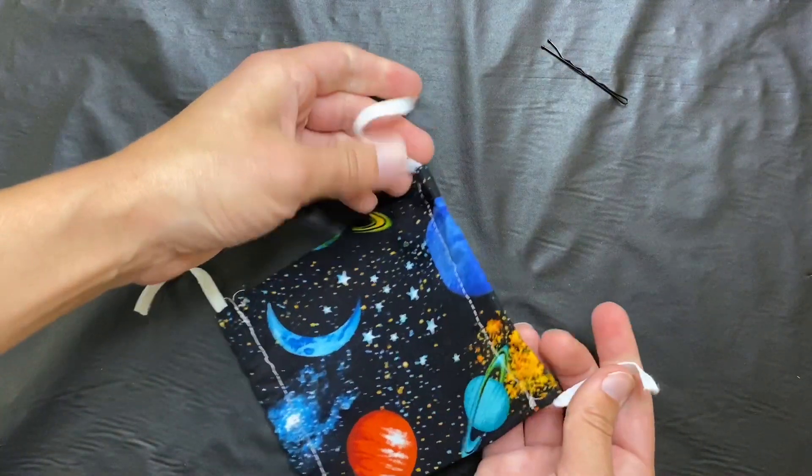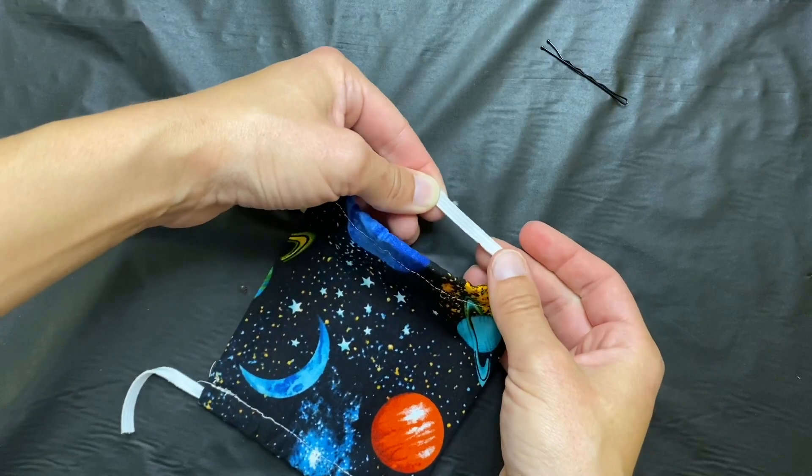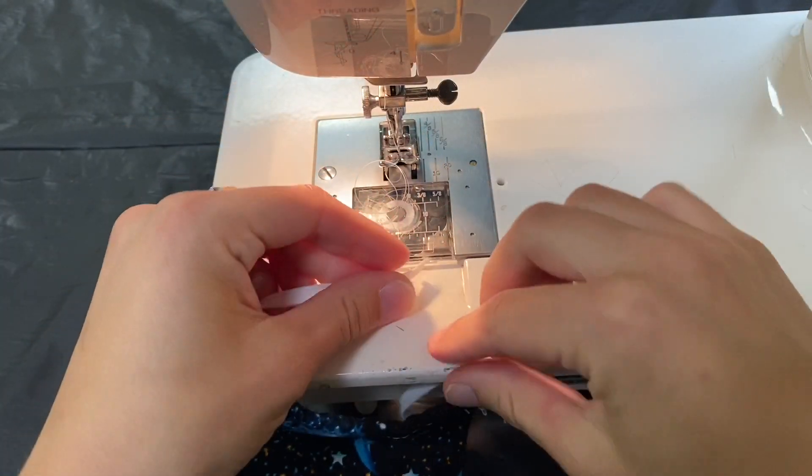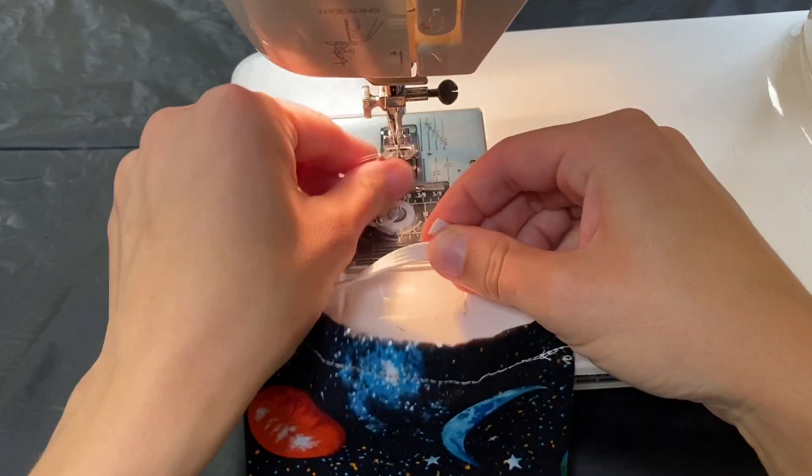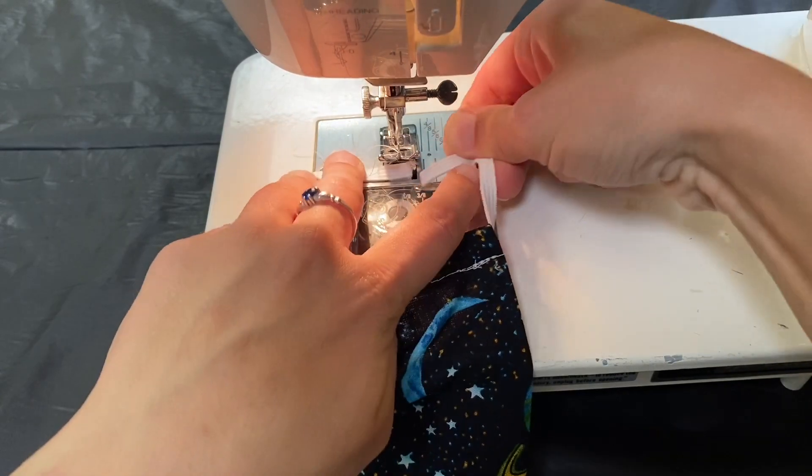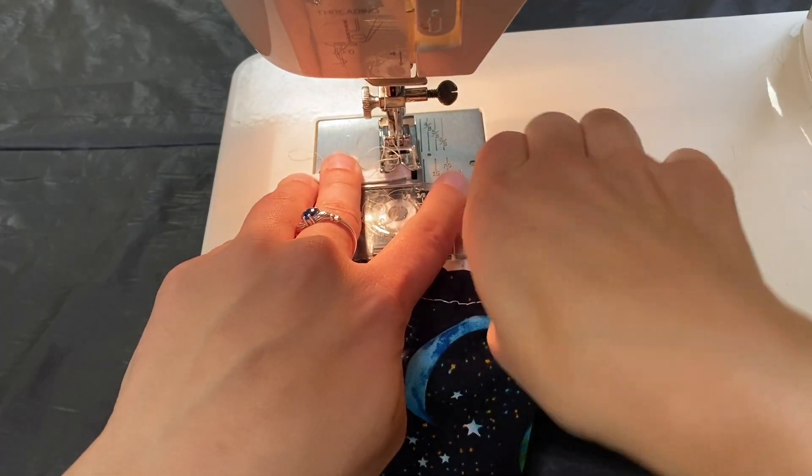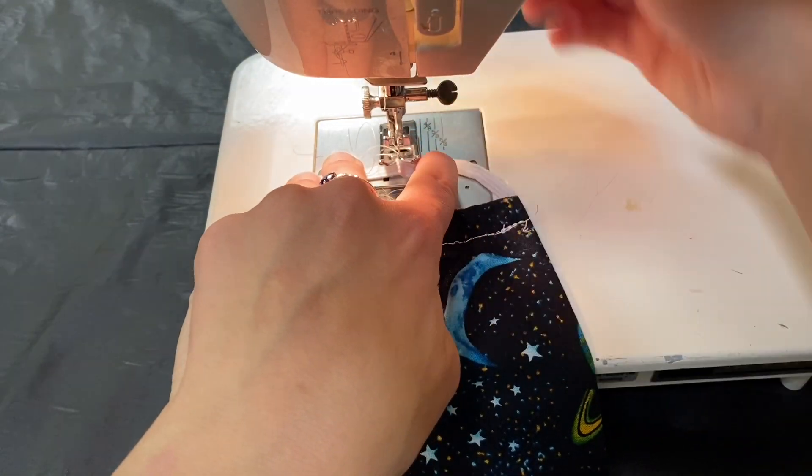There we go now all we have left is to sew these pieces of elastic together back to the sewing machine. I will just be holding these two pieces together letting them overlap a tiny bit. It's a bit tricky to get them positioned correctly but I believe in you and me we can do this.